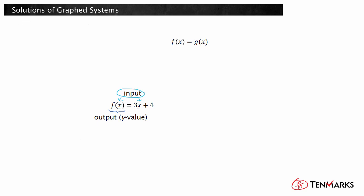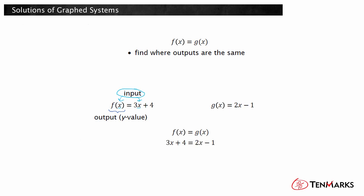So, given two functions f of x and g of x, the phrase 'find the solutions of the equation f of x equals g of x' means to find where their outputs are the same for the same x. For example, if you had the functions f of x equals 3x plus 4 and g of x equals 2x minus 1, what would f of x equals g of x look like? Substitute the expression for each function into an equation to get 3x plus 4 equals 2x minus 1.